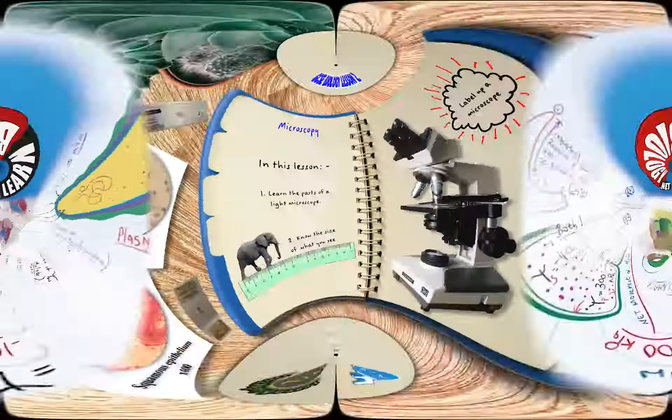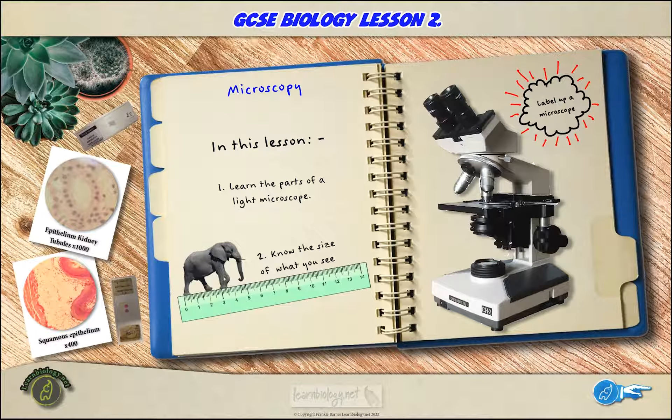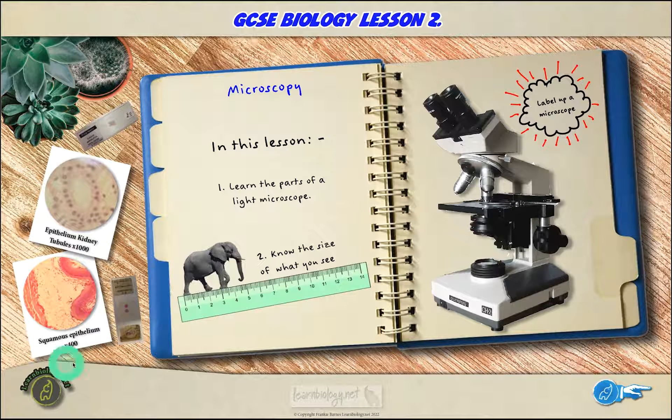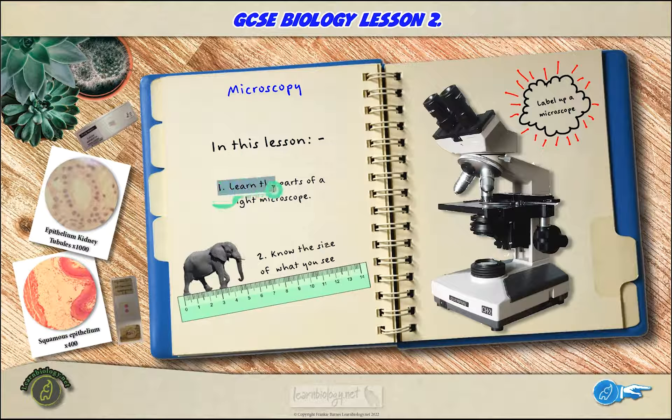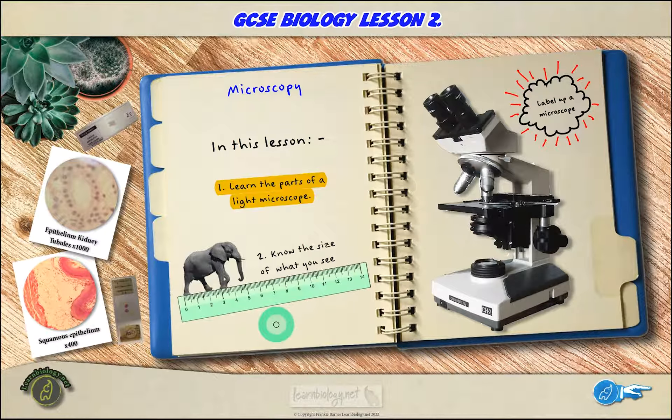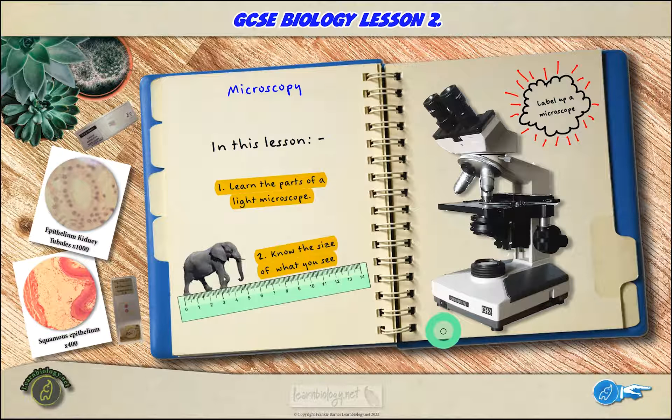So how do we observe cells or anything too small to be seen with the naked eye? Well, we use microscopes. In this lesson you'll have to learn the parts of a light microscope and you'll also need to know the size of the things that you see.